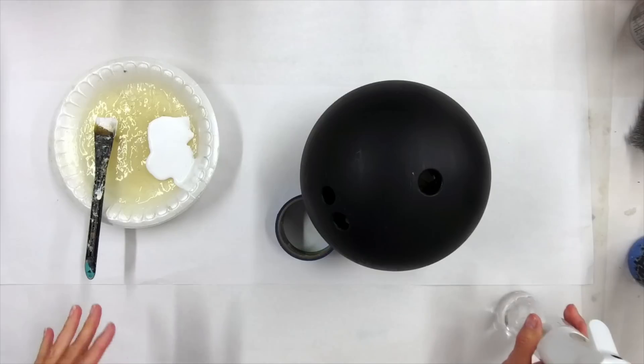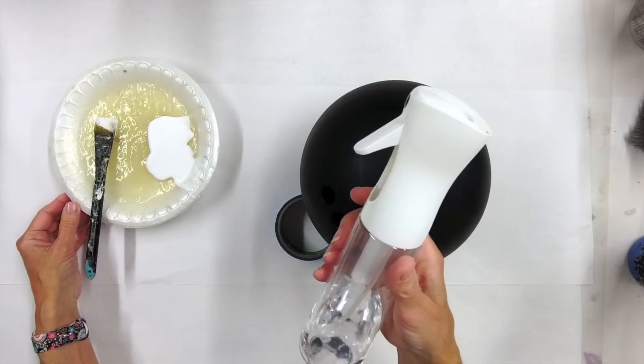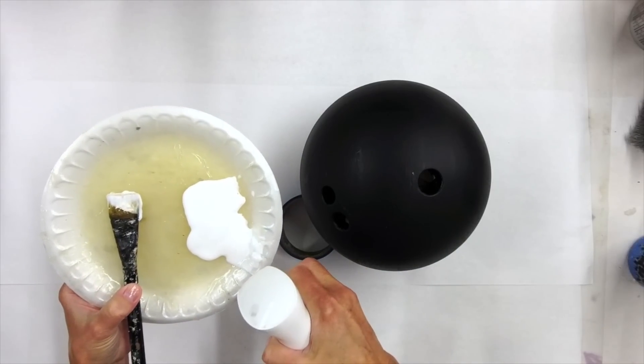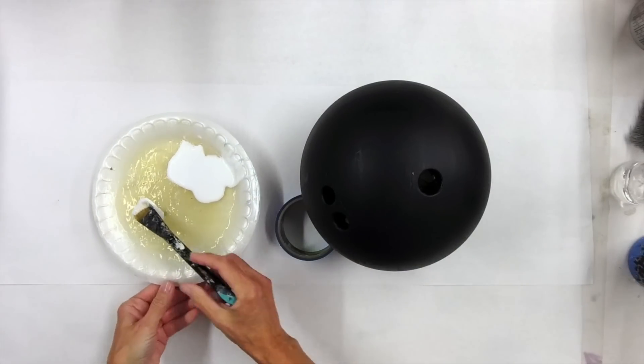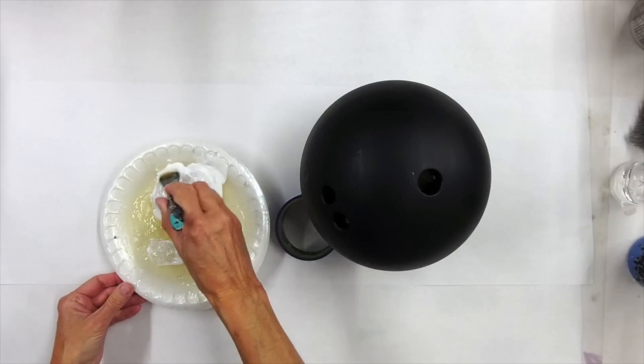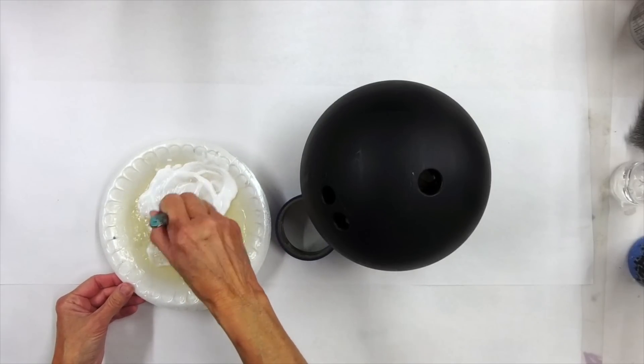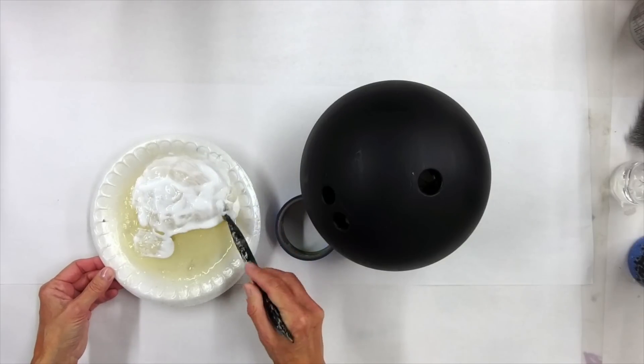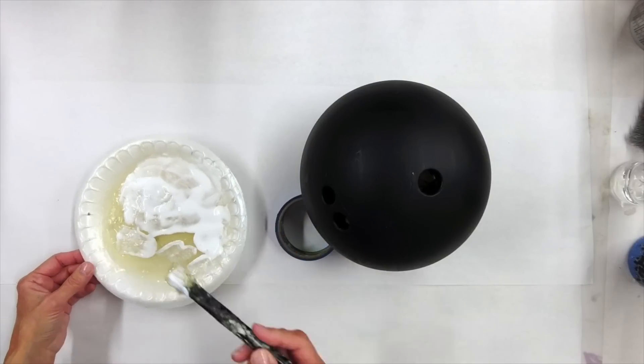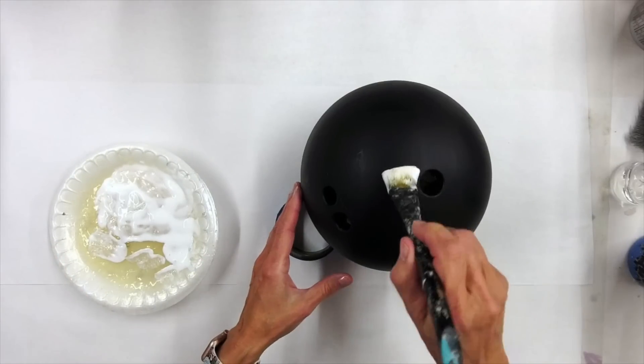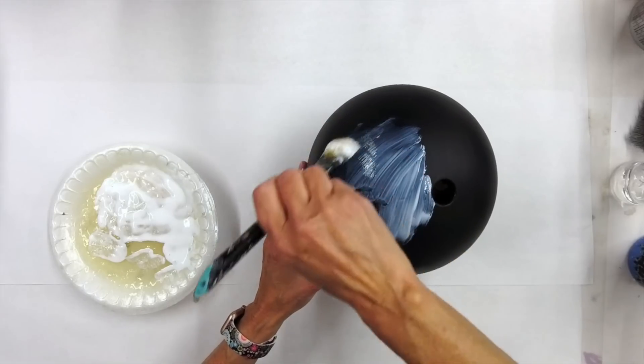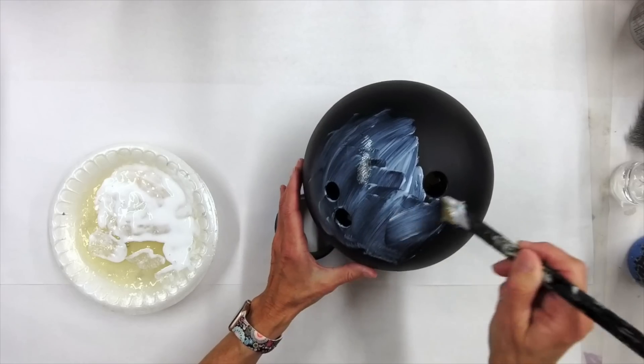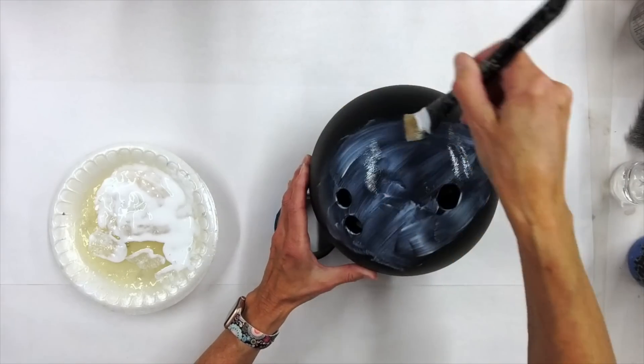The foil adhesive can be used straight out of the jar or you can add a little water to it. So I have a mist bottle here and I'm just going to mist on a little bit of water and mix it into the adhesive. When I'm doing a brush application and I'm working on something smooth, this will help to just allow the product to brush on a little bit smoother.